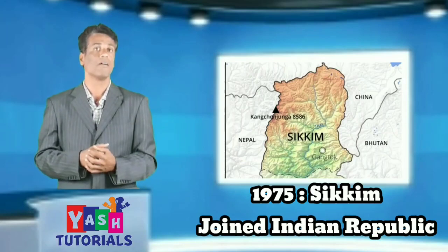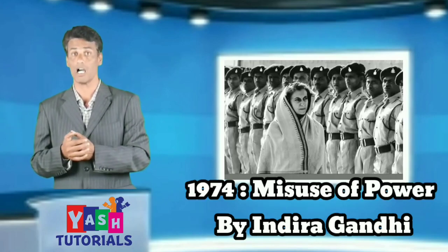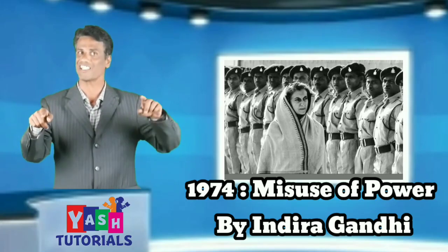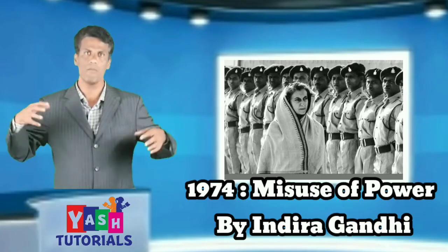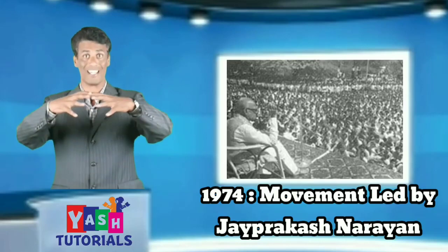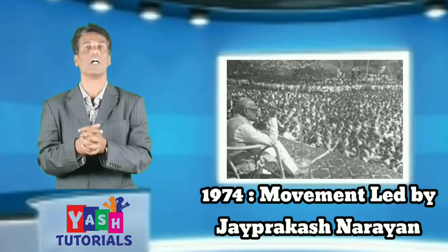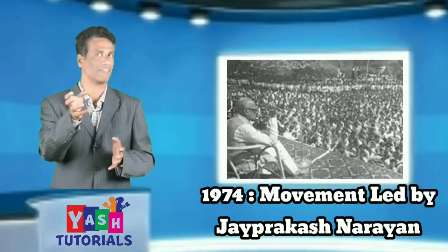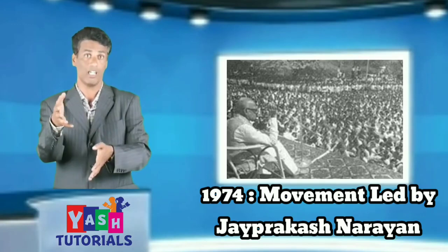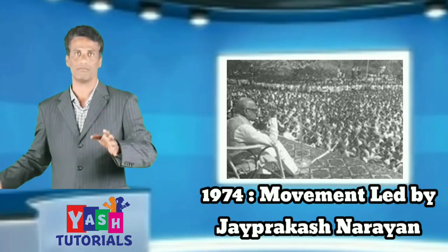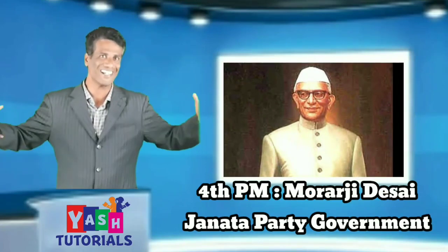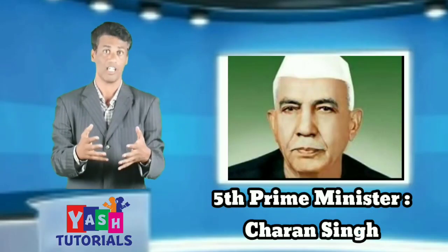In 1975, the people of Sikkim voted to join the Indian Republic, and Sikkim became a full-fledged state in the Indian Federation. The Allahabad High Court gave a verdict in 1974 that Indira Gandhi had misused government machinery during the election campaign. The movement led by Jai Prakash Narayan complicated the situation further. The government declared a state of national emergency, which lasted from 1975 to 1977. The Congress party was roundly defeated by the newly formed Janata Party. Morarji Desai became Prime Minister, but his government could not last long due to internal differences.